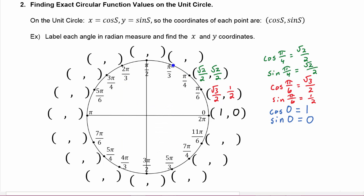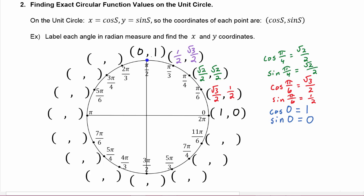The cosine of π/3 is 1/2, so that's the x value here. The sine of π/3 is √3/2, so that gives us the y value. When s equals π/2, the cosine of π/2 is equal to zero, and the sine of π/2 is equal to one.